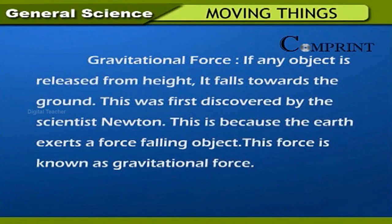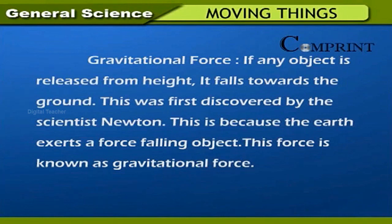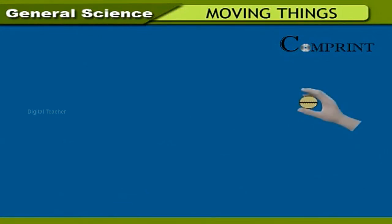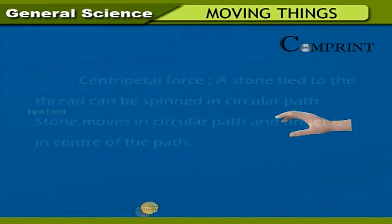Gravitational force: if any object is released from a height, it falls towards the ground. This was first discovered by the scientist Newton. The earth exerts a force on the falling object, and this force is known as gravitational force. When a ball is released from a height, it reaches the ground; any object thrown upward goes up to some height and comes back to the ground.